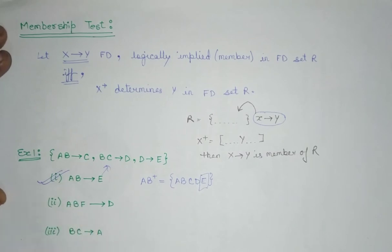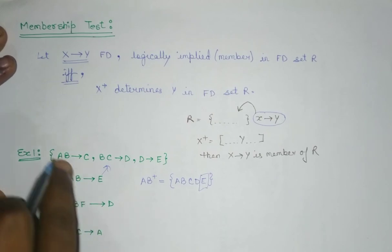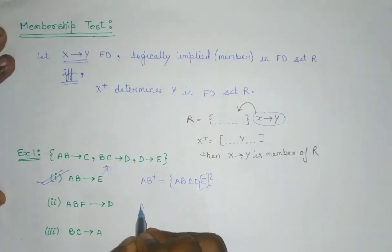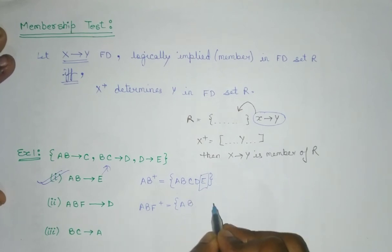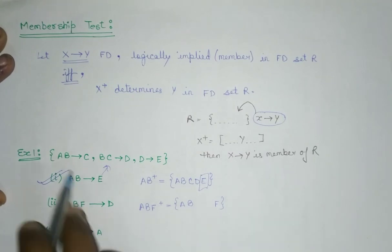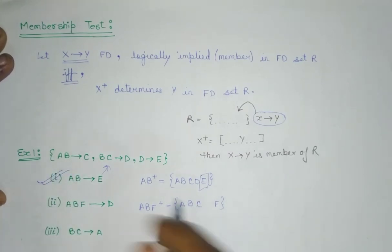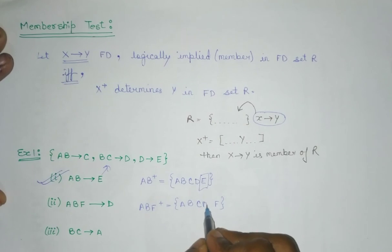Whether ABF implies D is a member of the set or not. So now what we have to do? I have to find out the closure of ABF. So it will be ABF. So it will be A, B, F. These are the trivial ones. Using AB, I can get C. Using BC, I can get D. And using D, I can get E.